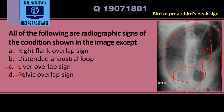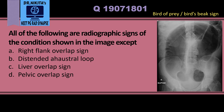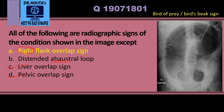The other important sign is the distended ahaustral loop — ahaustral means the haustra are absent. This differentiates sigmoid volvulus from cecal volvulus, which has haustra. The dilated bowel loop in sigmoid volvulus does not have haustral markings; it is ahaustral. So the important signs are: left flank overlap sign, ahaustral loop, liver overlap sign, and pelvic overlap sign. Therefore, the answer is right flank overlap sign, which is incorrect for sigmoid volvulus.